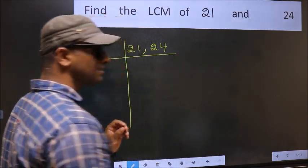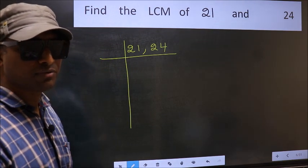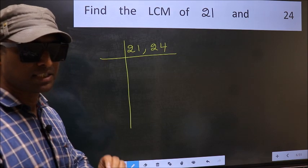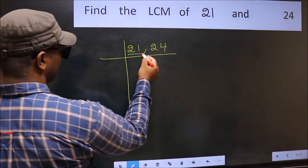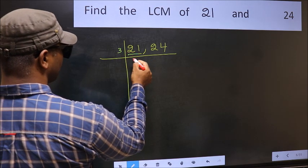This is your step 1. Now you should focus on the first number, which is 21 here. Now 21 is 3 times 7 equals 21.